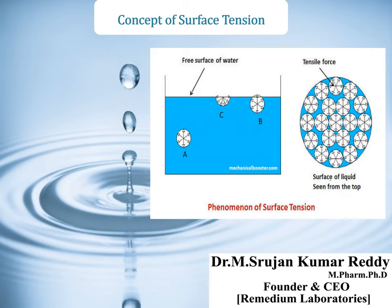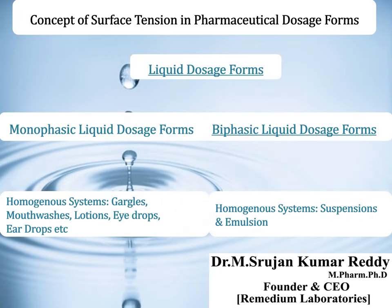A droplet is not just one water molecule — a droplet contains many water molecules. Any droplet you see has a concave surface, and inside it are many water molecules present in the bulk. Now we will move on to the concept of surface tension in pharmaceutical dosage forms — in what way surface tension will influence the formulation development of pharmaceutical dosage forms. Liquid dosage forms are divided into monophasic and biphasic. Monophasic liquid dosage forms are homogeneous systems — examples include gargles, mouthwashes, lotions, eye drops, ear drops — while biphasic liquid dosage forms are heterogeneous systems, such as suspensions and emulsions.